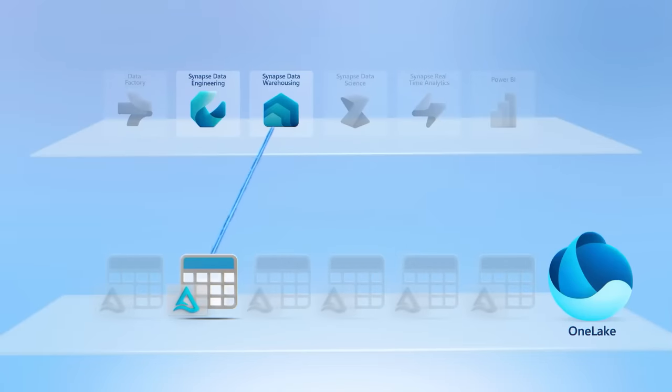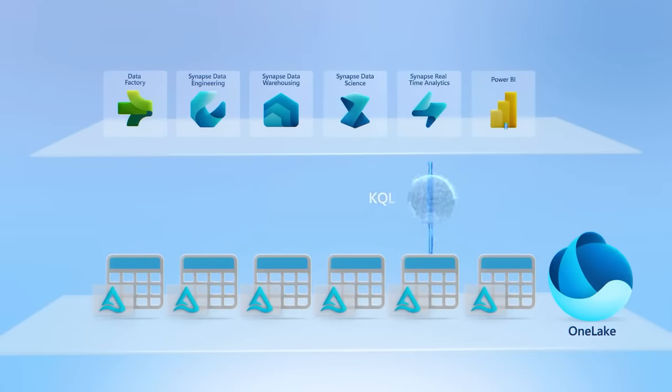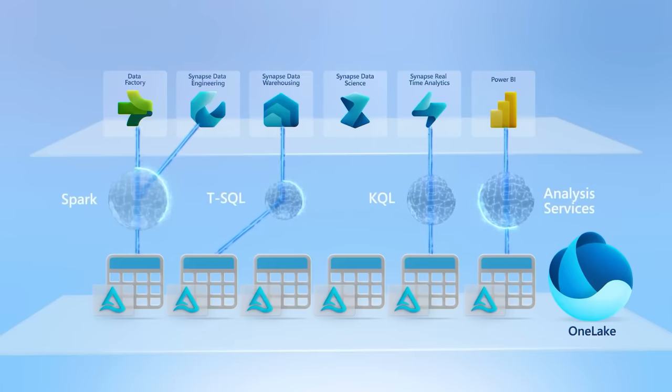That leads me into One Lake as a whole. They've made some really big changes to how they're actually going to store data. Within One Lake, they're going to store all of their data in something called an open delta parquet format. This means that no matter what service or tool you're using within Microsoft Fabric, it's all going to be using the same data in One Lake in that same open delta parquet format. Microsoft says they chose the parquet format because it's really efficient at storing a lot of data and also really flexible, so it can be used with a lot of analytics tools.